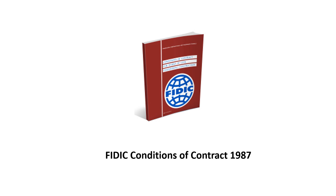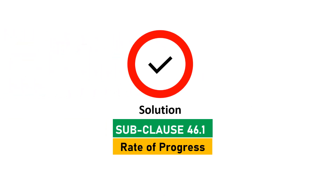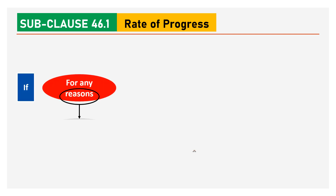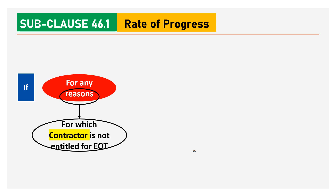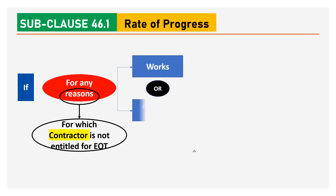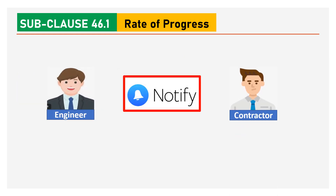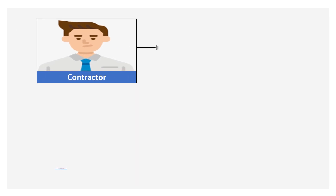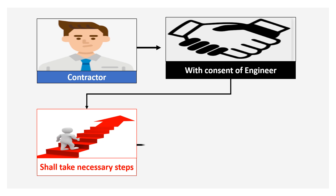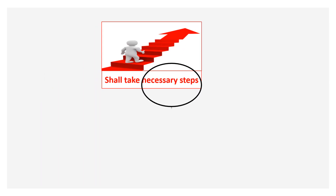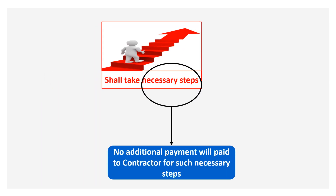Under FIDIC conditions of contract 1987, subclause 46.1 deals with rate of progress. This subclause says that if for any reasons — reasons meaning those for which the contractor is not entitled for EOT — if works or any part thereof are too slow to comply with the time for completion, the engineer shall notify the contractor. The contractor, with the consent of the engineer, shall take necessary steps to expedite the progress of work. No additional payment will be made to the contractor for such necessary steps.